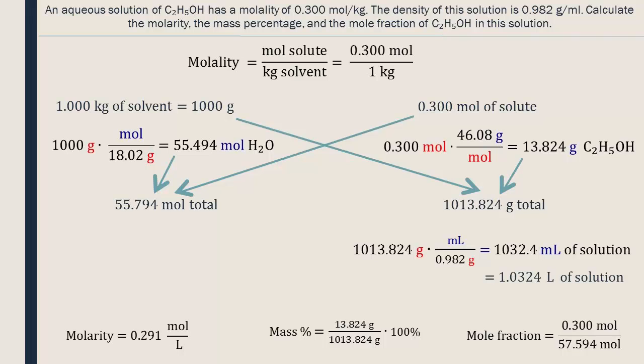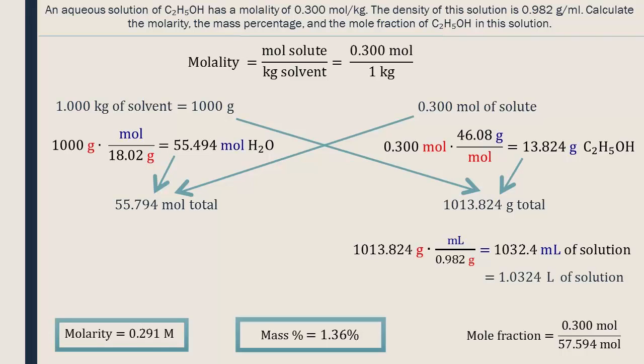The molarity is 0.291 moles per liter, which can also be expressed as a capital M. The mass percentage is 1.36%, and the mole fraction is 0.00538, which doesn't have any units because they all get cancelled out.